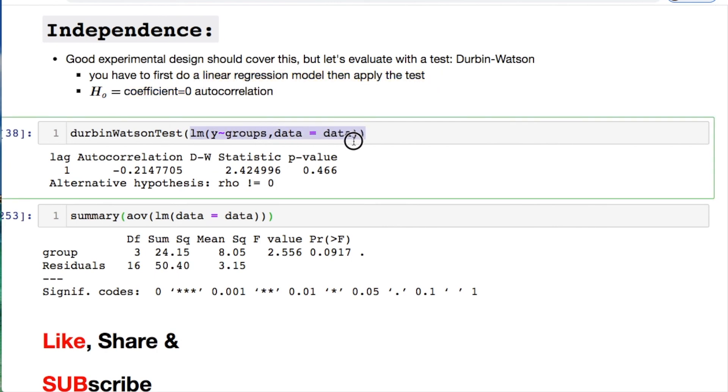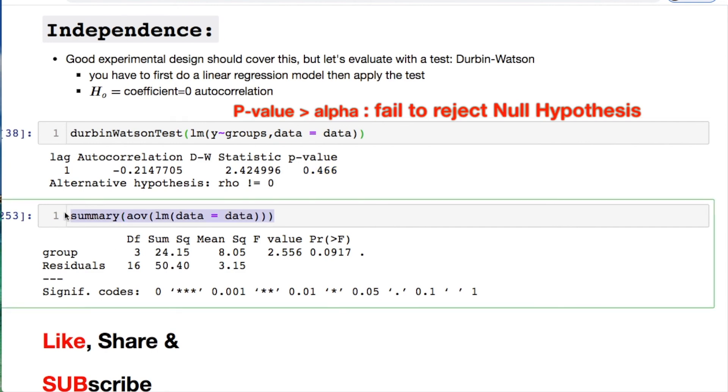Apply the linear regression model. Then apply the Durbin-Watson test. Here we go. We have a pretty good p-value greater than the 0.05. We fail to reject the null hypothesis. As more reinforcement I show the ANOVA once more.